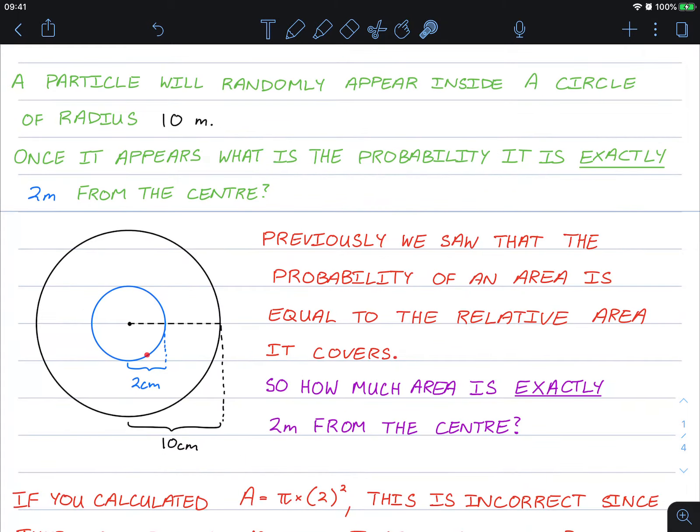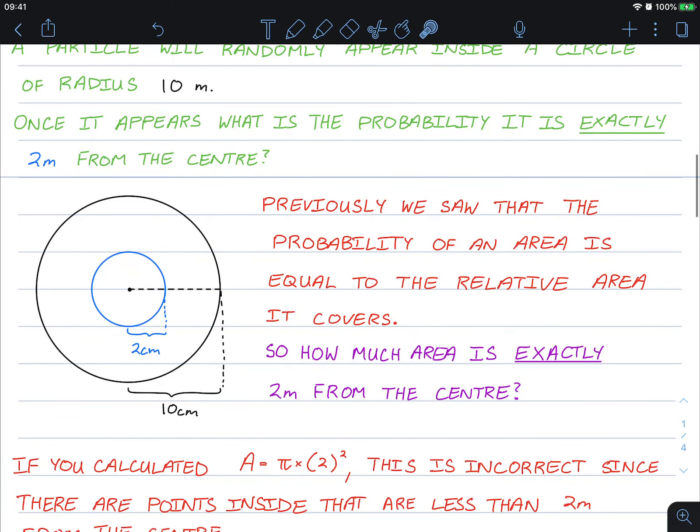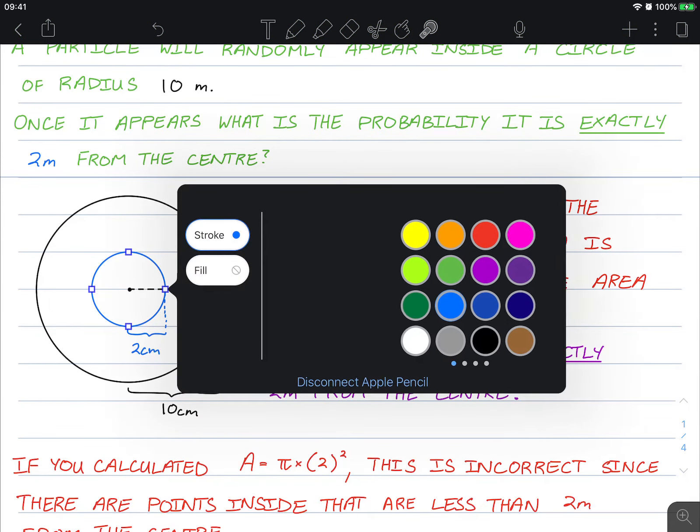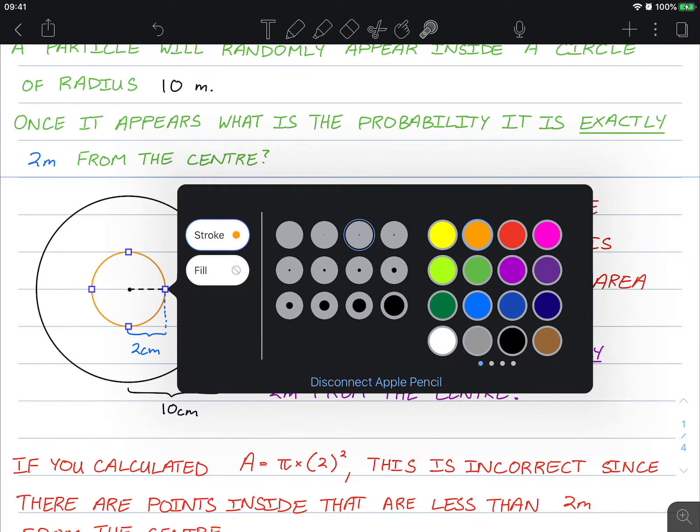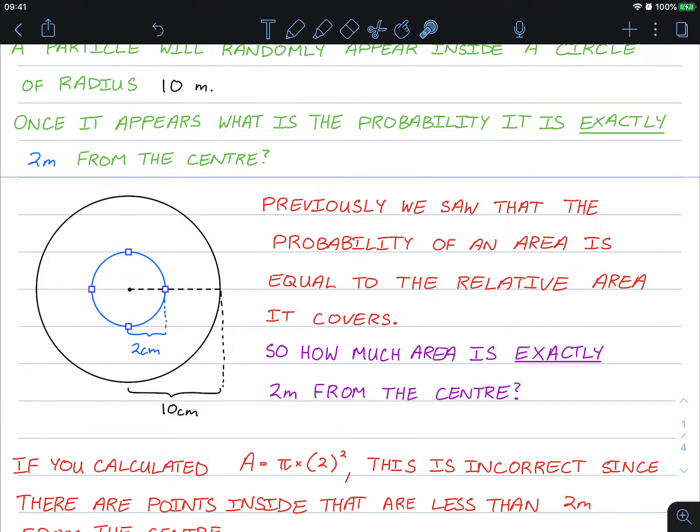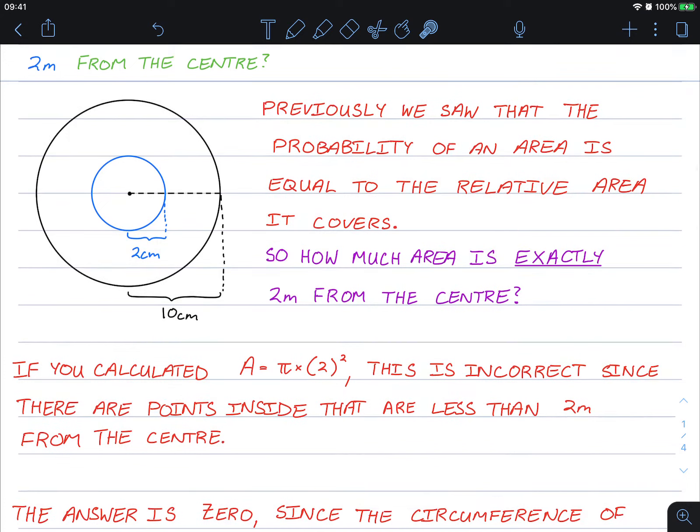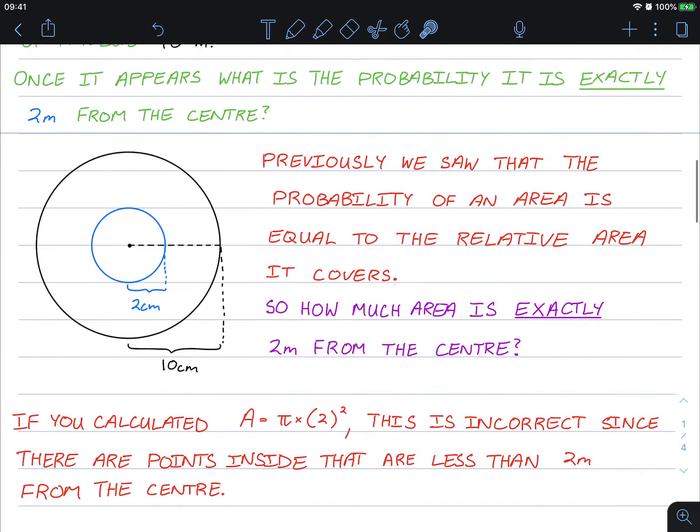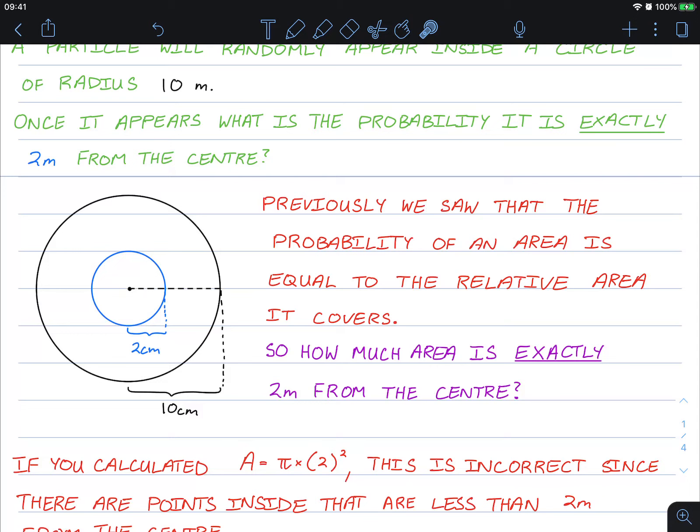Well, previously we saw that the probability of an area is equal to the relative area it covers. So how much area is exactly two meters from the center? If you calculated it to be area equals π times 2 squared, this is actually incorrect since there are points inside that circle that are less than two meters from the center.